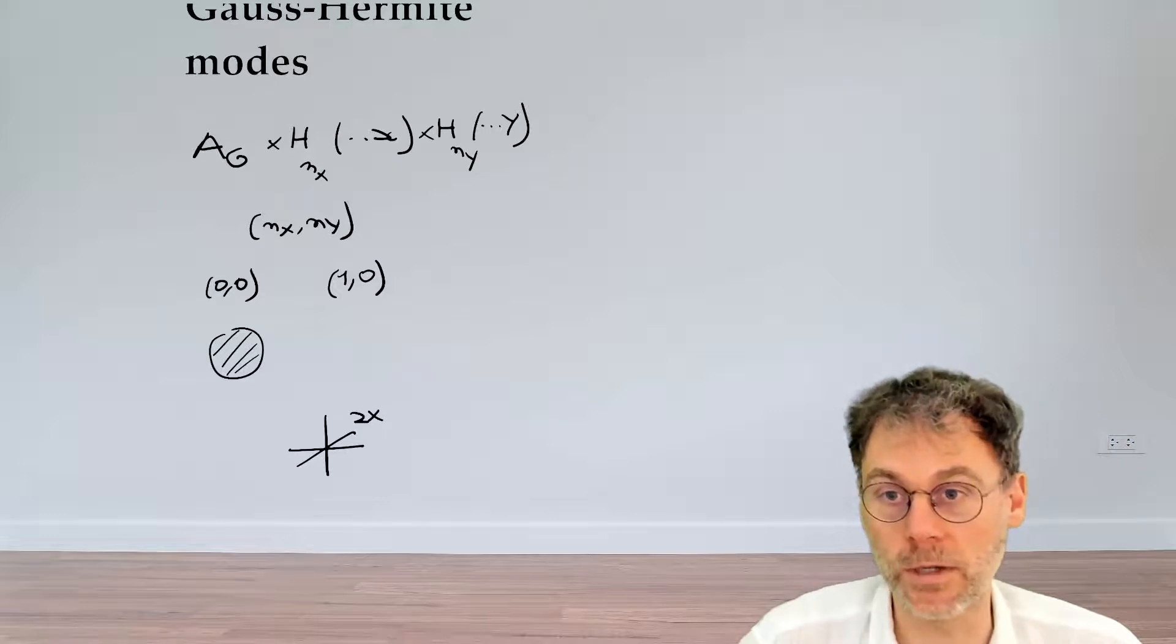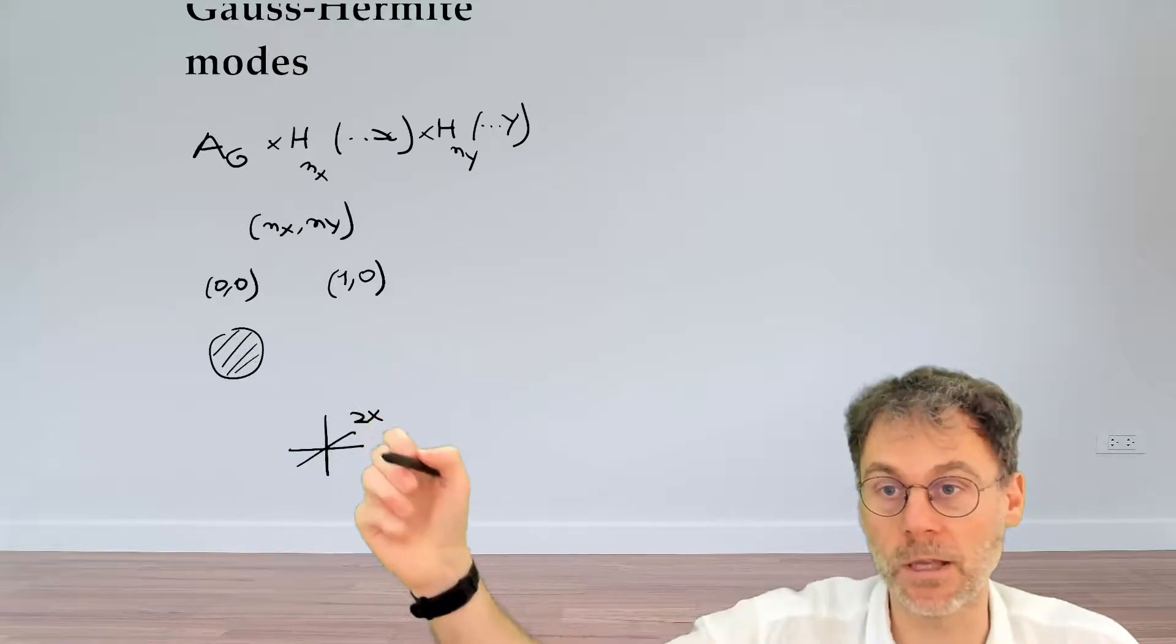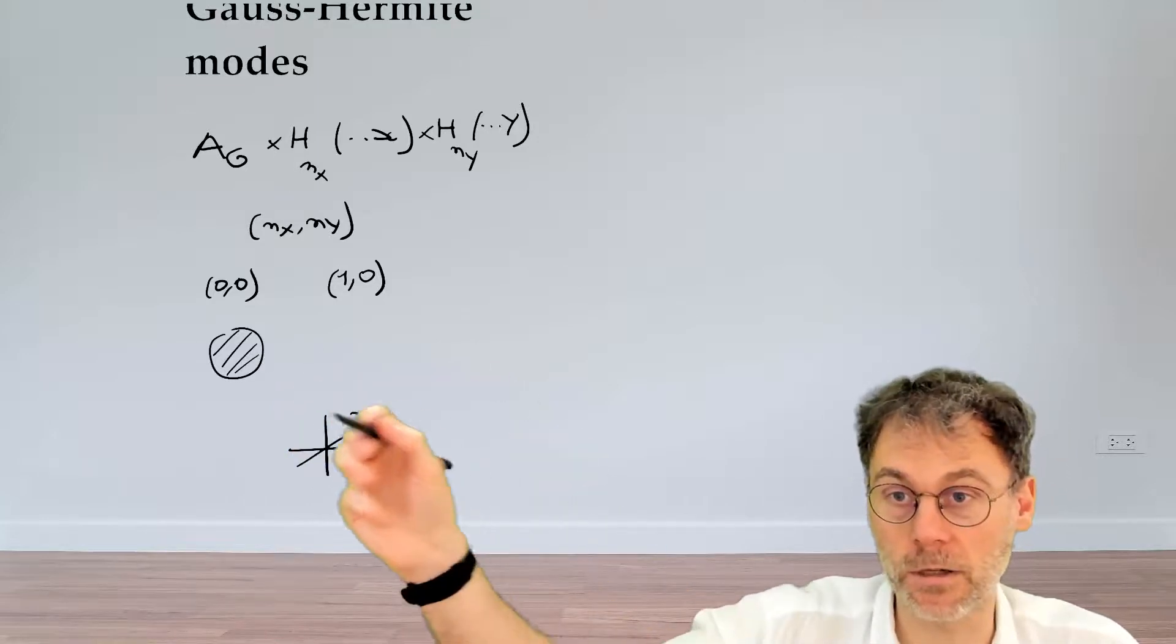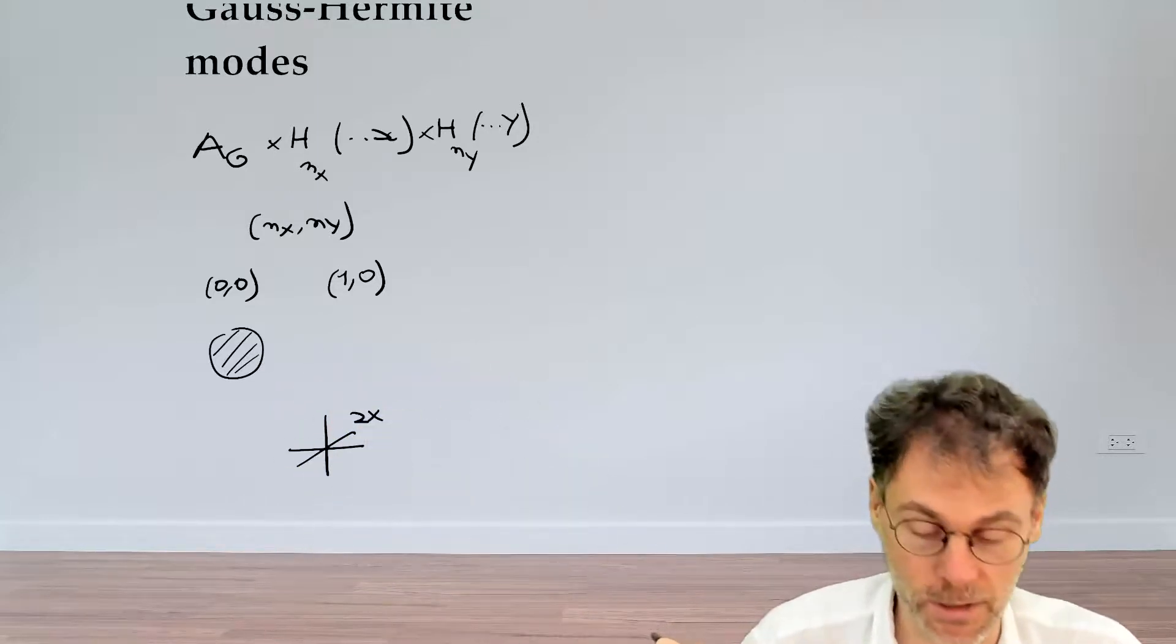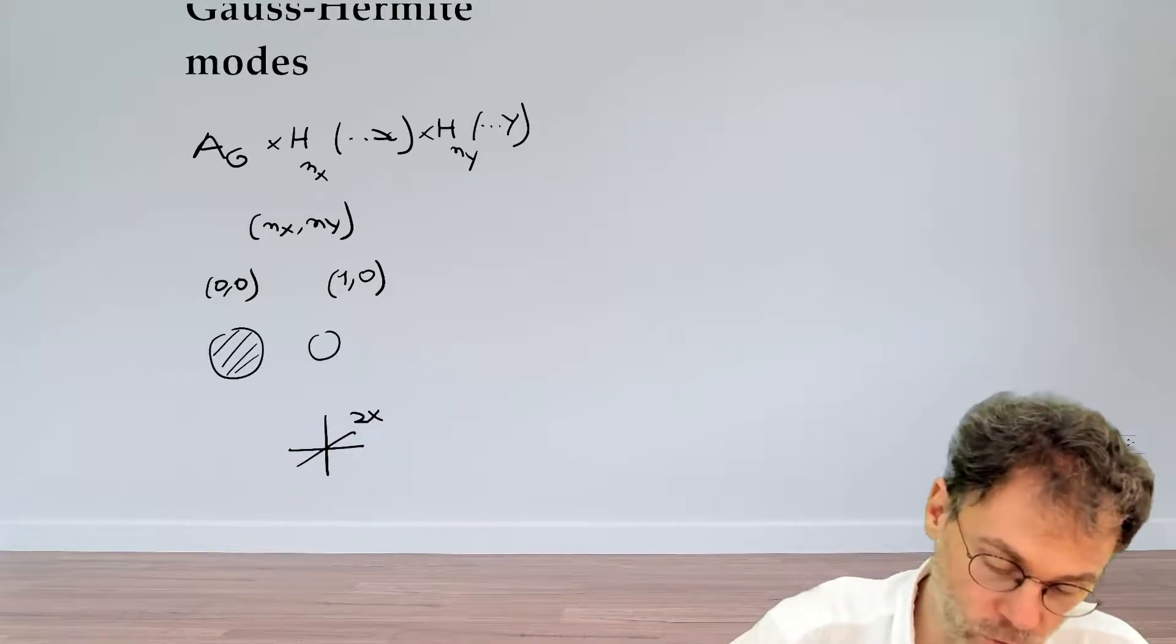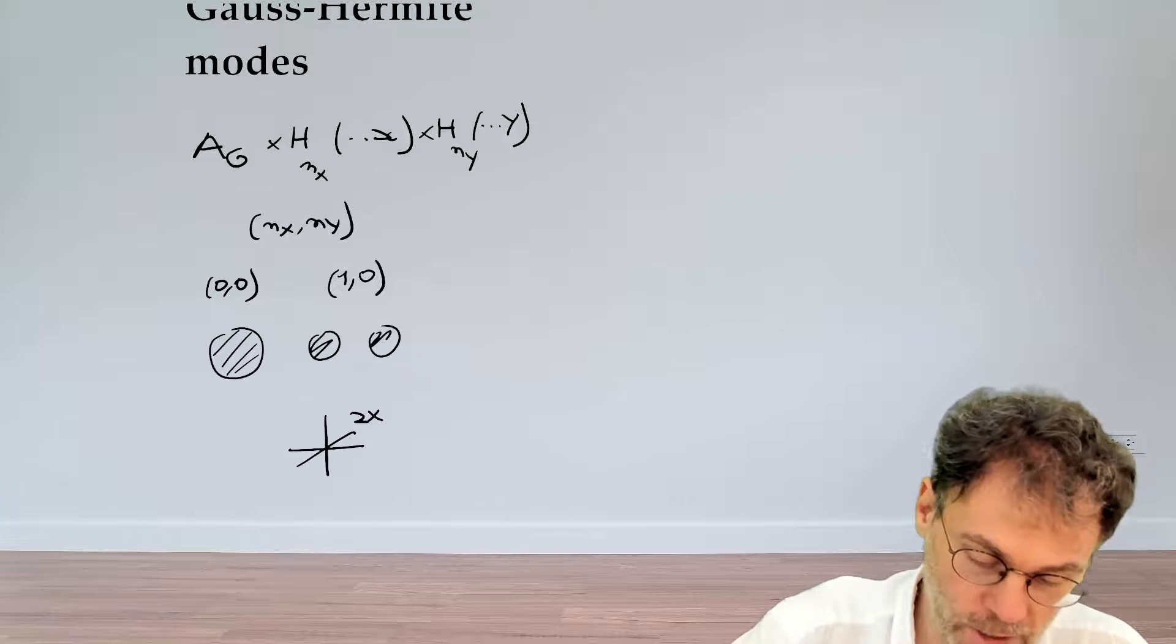So what we see is that if you multiply this thing by that thing, then there's nothing happening in the origin anymore because the Hermite polynomial is 0 there. So this single blob will break apart into two smaller blobs like this.